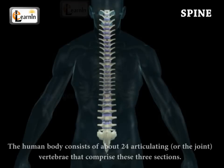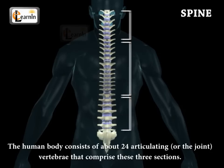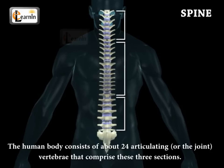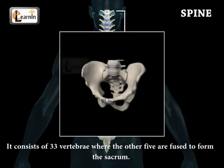The human body consists of about 24 articulating vertebrae that compose these three sections. However, in reality it consists of 33 vertebrae, where the other five are fused to form the sacrum.